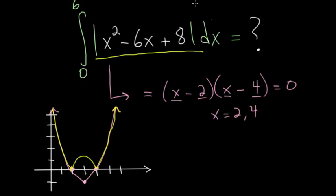This integral is asking us, what is the area underneath the curve of this absolute value function between x values of 0 and 6? So we need to figure out what is this area. We'll need to break up our integral into three separate parts, because we have to change it for this part.